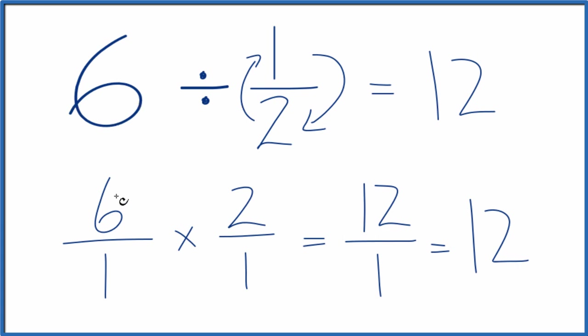So to recap, we took 6, put it as a fraction over 1, multiplied by the reciprocal of 1 half, got 12 over 1, which simplifies to 12.